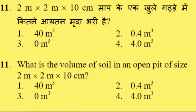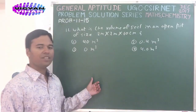The first problem of this episode, problem number 11: What is the volume of soil in an open pit of size 2 m × 2 m × 10 cm? Option 1: 40 m³. Option 2: 0.4 m³. Option 3: 0 m³. Option 4: 4.0 m³.